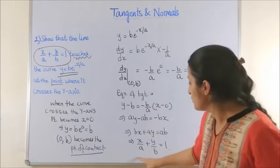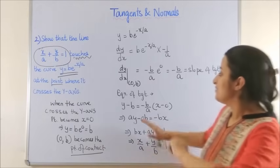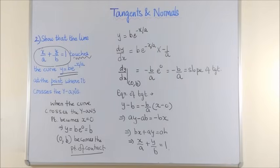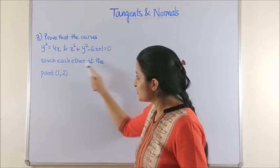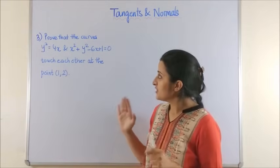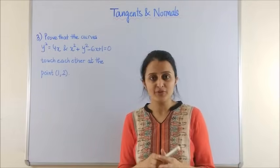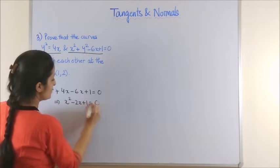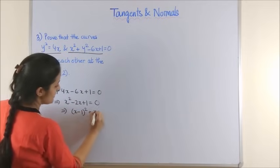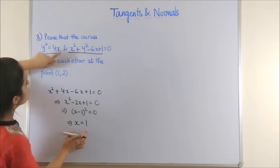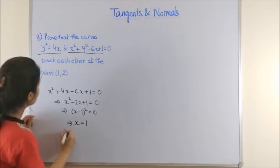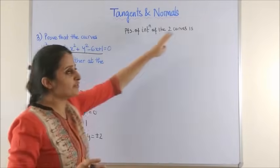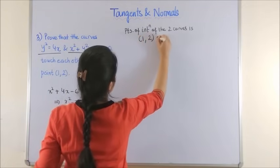The third question says: prove that the given two curves touch each other at the point (1, 2). Let's first get the points of intersection of the two curves. Replacing y² with 4x in the second curve gives x² − 2x + 1 = 0, i.e., (x − 1)² = 0, so x = 1. Using x = 1 gives y² = 4, so y = ±2. The points of intersection are (1, 2) and (1, −2).